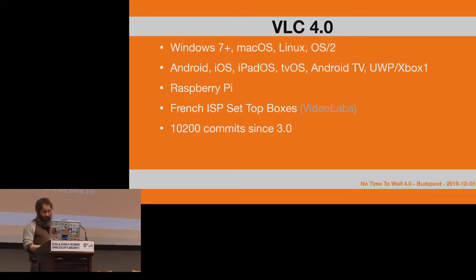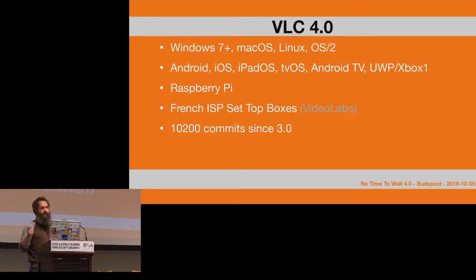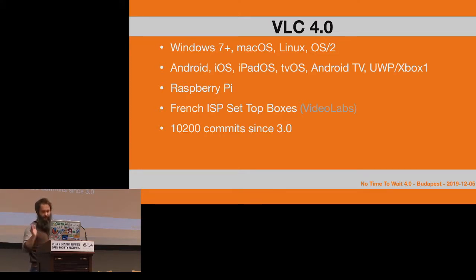VLC 4.0 is the version that will be released — probably not this year, hopefully early next year. It supports Windows 7, Mac, Android, iPadOS, Raspberry Pi, and all the platforms we already support. Through partnerships and Videolabs, French ISPs ask us to port VLC to their set-top boxes so people can play any kind of file from USB keys or downloaded from the internet — in MKV format, of course.